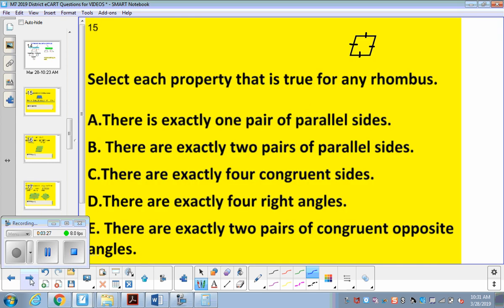All right, and now for number 15, select each property that is true for any rhombus. So this is a select all. Is there exactly one pair of parallel sides? No. So that is a pair, and this is also a pair. So we have two pair, so we're not picking A. Here it is for B. There are exactly two pairs of parallel sides. Good.